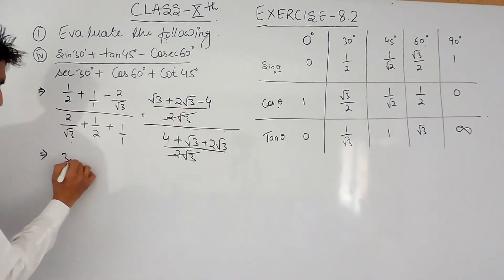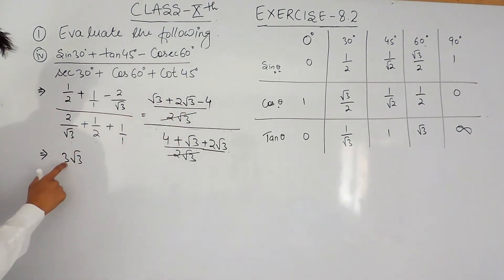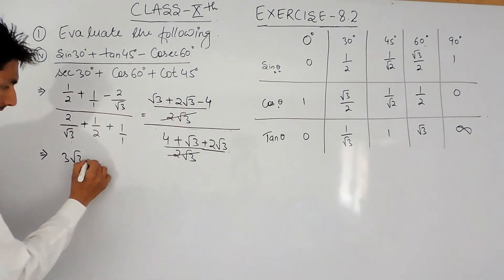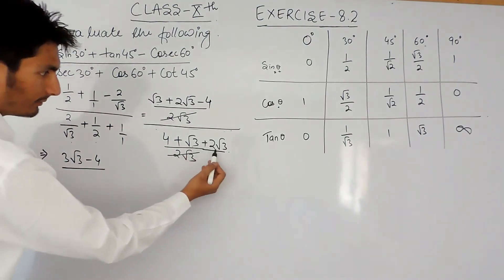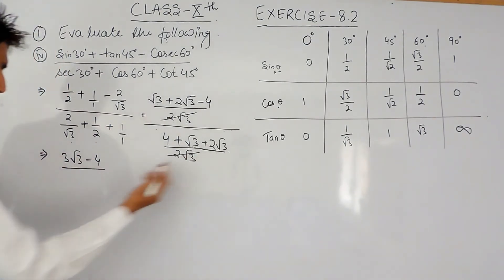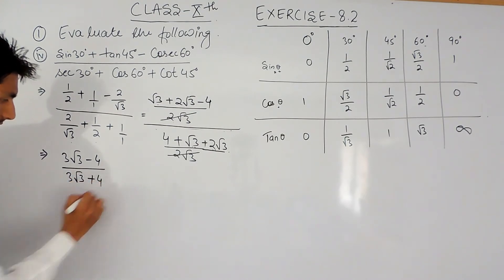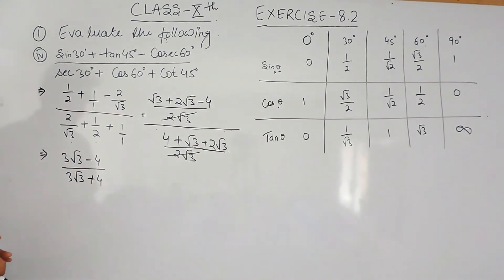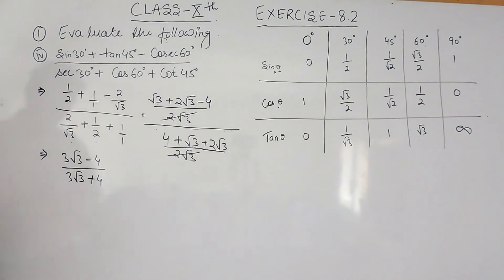Since root 3 and root 3 are like terms, 1 root 3 plus 2 root 3 will be 3 root 3. So the numerator becomes 3 root 3 minus 4, and the denominator becomes 3 root 3 plus 4. Now there is a root in the denominator, so we have to rationalize it.